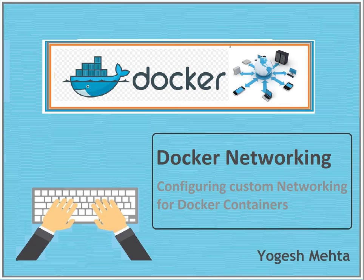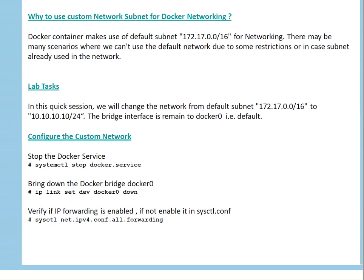To quickly demonstrate how we can change the default subnet, I recorded this video. The scenario is where we want to use a custom network subnet. By default, a Docker container makes use of the default subnet which is 172.17.0.0/16 for networking. There may be scenarios in your network where you can't use this subnet — maybe due to restrictions or because the subnet is already in use.